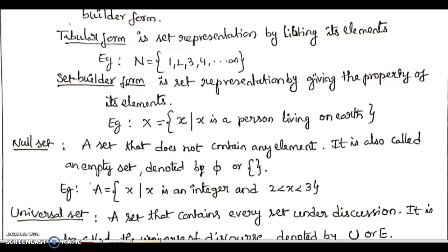In the tabular form of the set, we give the list of the elements. For example, if we specify that N is equal to the collection of elements 1, 2, 3, 4 and so on to infinity, because in this collection the list of the elements in the set of natural numbers is given, this form of describing the set is called the tabular form.